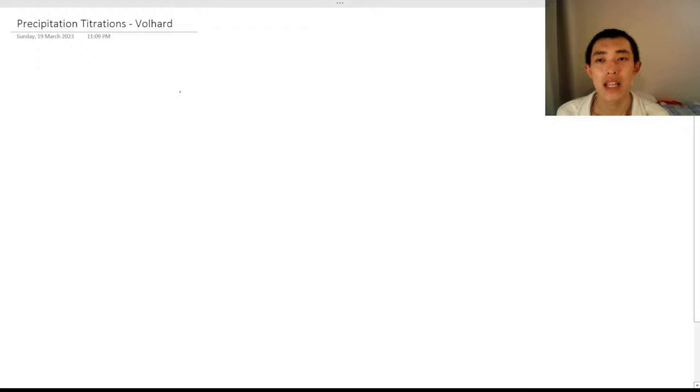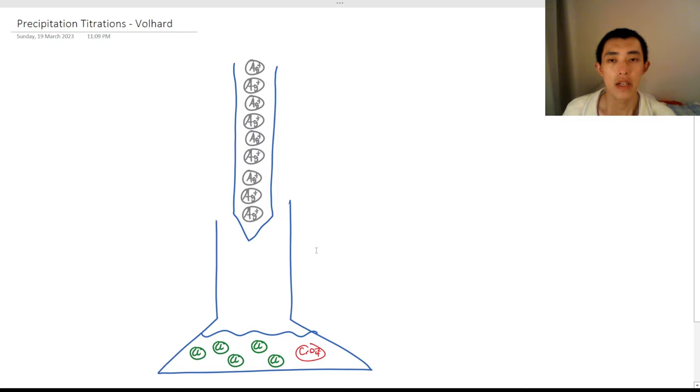Let's grab that image of the titration we had from before. So this is the Moore method. For the Volhard method, what we're going to do is we're not actually going to titrate in the silver nitrate. We're actually just going to let it all go in. So if we have a rough idea that there's around 5, here we have 9, we're going to let all of them go in.